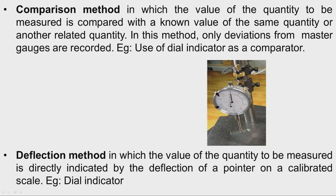We mount the dial indicator on a stand, then insert a slip gauge between the datum surface and the spindle to set the desired value. Then we remove the slip gauge and insert the workpiece whose height is to be measured. When the workpiece is placed between the datum and spindle, the pointer moves and indicates the deviation of the height with reference to the slip gauge height.